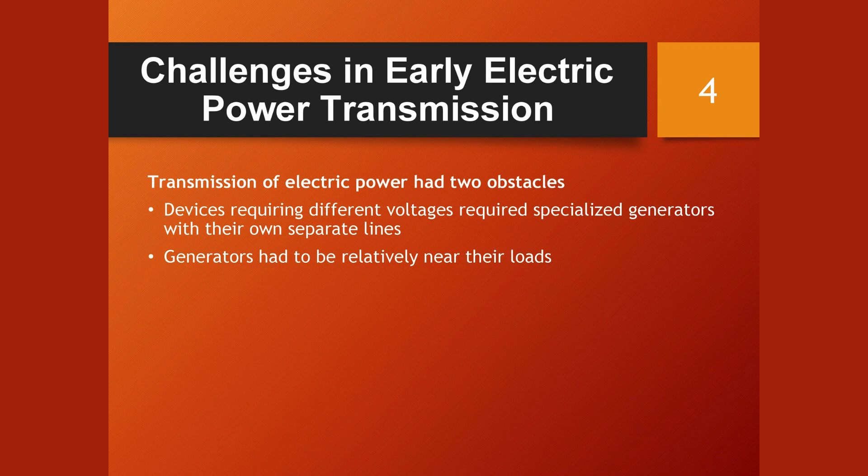The transmission of electric power faced two challenges during this early period. Firstly, devices with different voltage requirements necessitated specialized generators with dedicated lines. Secondly, generators had to be positioned in relatively close proximity to their respective loads.